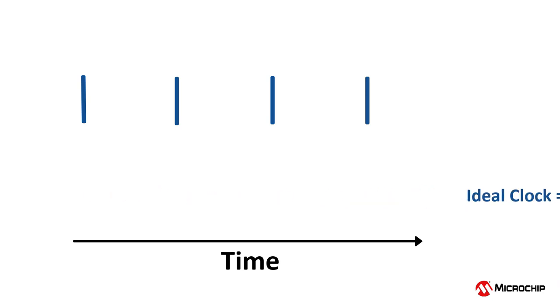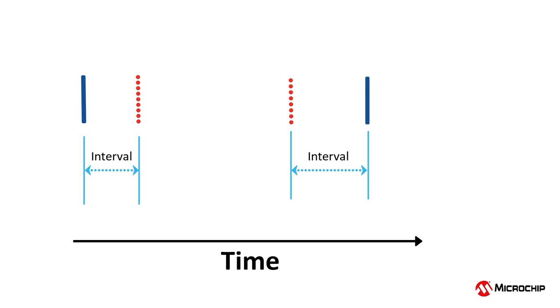These red lines represent a real clock's rising edge. Sometimes, the real clock's rising edge matches the ideal clock. Other times, it falls before the ideal clock, or after the ideal clock, as drawn here. The distance in time between the blue and red clock edges, the interval between the ideal clock rising edge and the real clock rising edge, is the error.